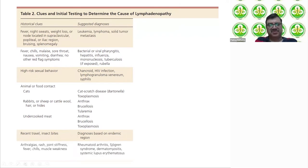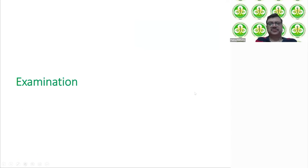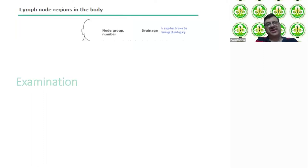If there is a history of recent travel to an endemic area or insect bites, the diagnosis is guided by the endemic region. Someone presenting with arthralgia, rash, joint stiffness, fever, chills, or muscle weakness is likely to have an autoimmune disorder.